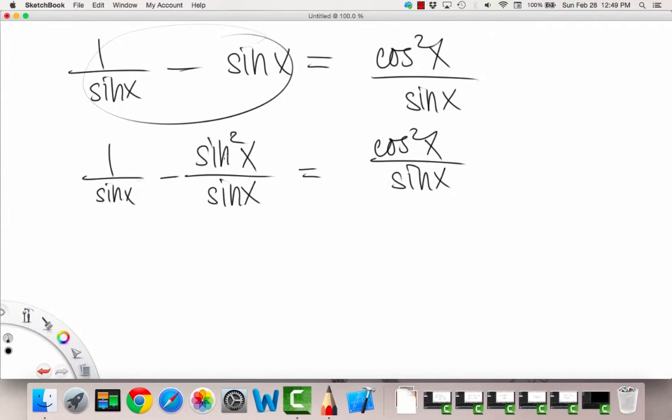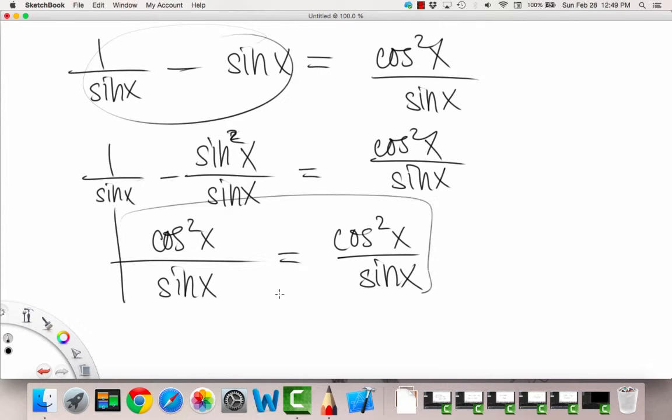So on the left-hand side, we can combine the top. So 1 minus sine squared x is equal to cosine squared x, due to the Pythagorean identity. So on the left-hand side, we get cosine squared x over sine x, which matches exactly what we have on the right-hand side. So we are done. And thus, we have proved the identity that we started with.